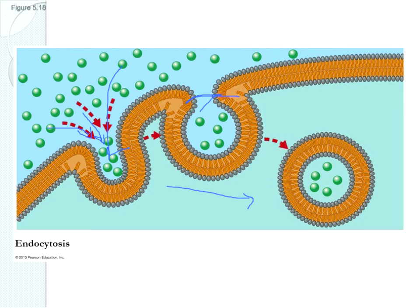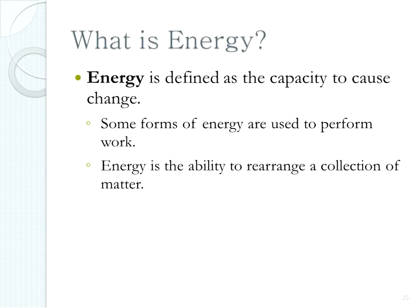That's a summary of the different ways that substances can get across the membrane — either one at a time by diffusion, facilitated diffusion, or active transport, or in bulk using vesicles. The next function of cells we'll get into is making and using energy. We start with a general discussion about energy in this chapter, and then a more detailed discussion in chapter 6.